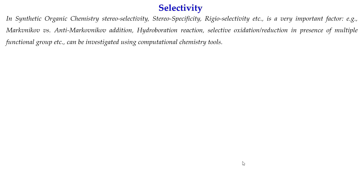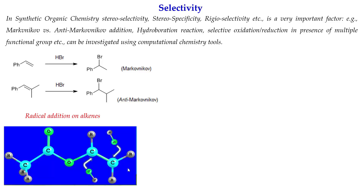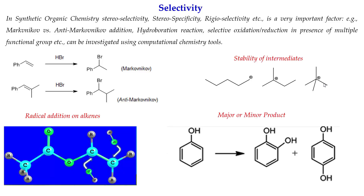Selectivity is also very important in synthetic organic chemistry. Reactions like Markovnikov or anti-Markovnikov addition, hydroboration, selective oxidation and reduction in the presence of multiple functional groups — all can be investigated using computational chemistry. For example, you can determine where bromine will add in a Markovnikov reaction, whether at the more or less hindered position, or which end a radical will add to a double bond. The stability of intermediates like primary, secondary, or tertiary carbocations can be assessed, and you can identify which product is major and which is minor — such as whether addition occurs at ortho or para positions.